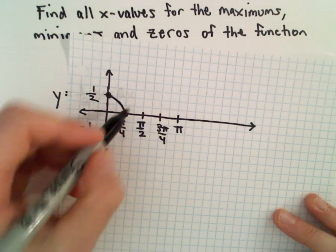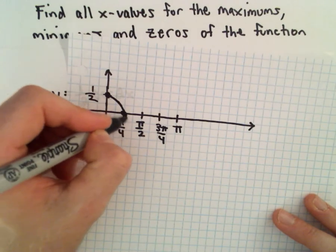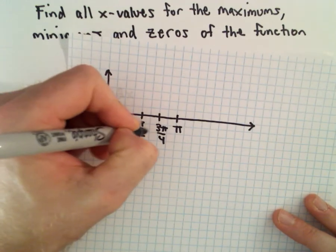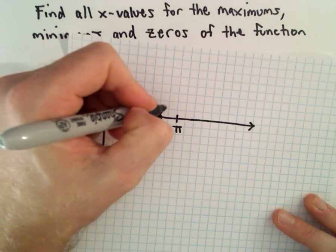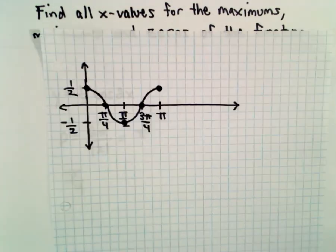At π/4, we'll be at 0. At π/2, we're at -1/2. At 3π/4, we're back at 0. And at π, we're back at 1/2.